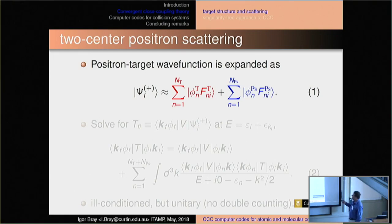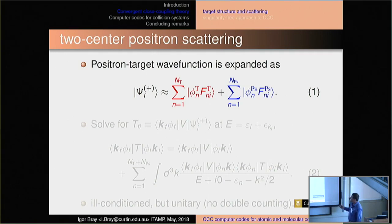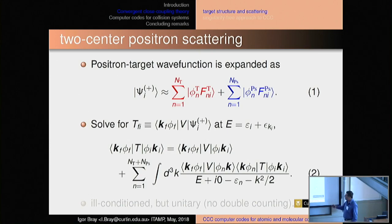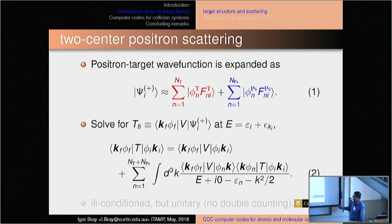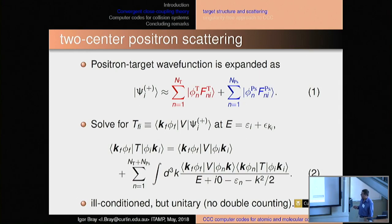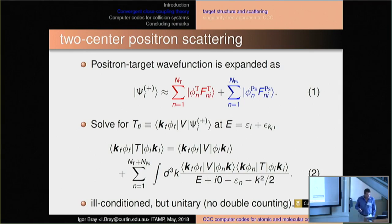If it's a two-centre calculation — positron scattering on an atom is a two-centre problem because of the possibility of positronium formation — that's equivalent to charge exchange when you have proton scattering on an atom. Something fairly exotic, positron on an atom, is ubiquitous when it becomes proton on an atom, but with the same computational complexities. So you have a double expansion, non-orthogonal expansion, but both complete. We solve the coupled Lippmann-Schwinger equations in momentum space, which we find particularly computationally efficient. The system can be ill-conditioned, but of course it's unitary — so no double counting.